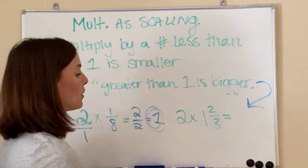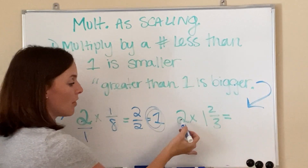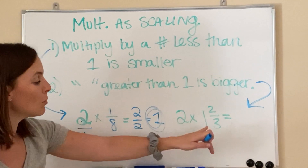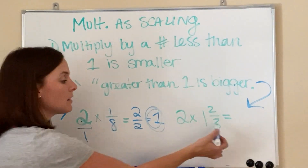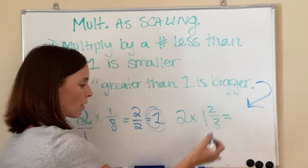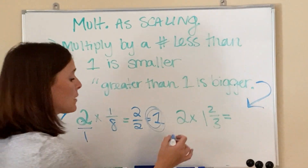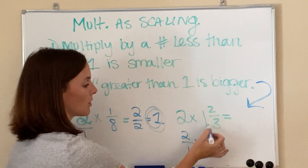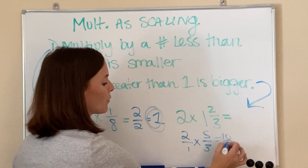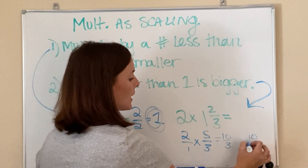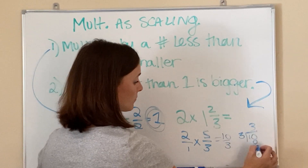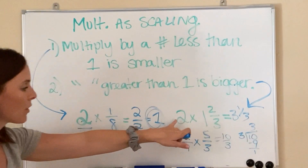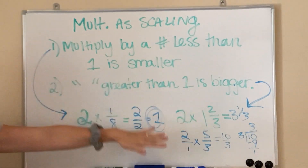Now let's see the example where the answer is going to be bigger than my two, three, or four — whatever I'm multiplying. If you multiply by something bigger than one, like one and two thirds, I can prove this: two over one times five over three gives me ten over three. Ten divided by three is three and one third, and isn't three and one third bigger than my two? So the rule applies every time.